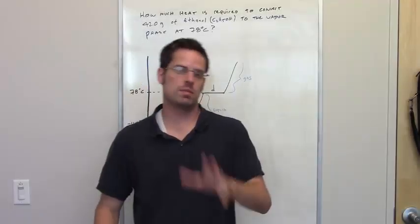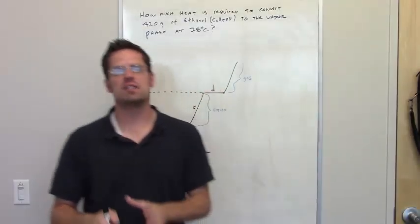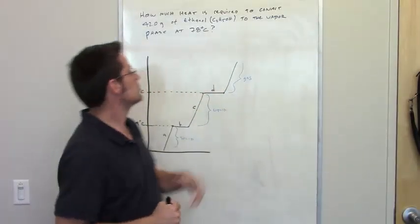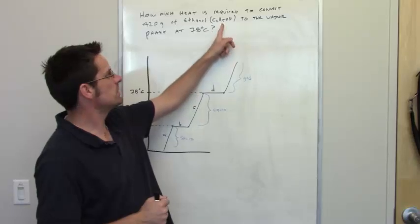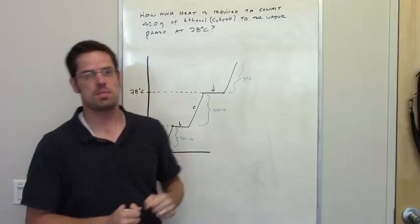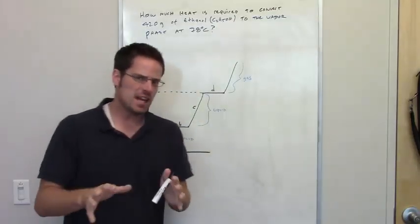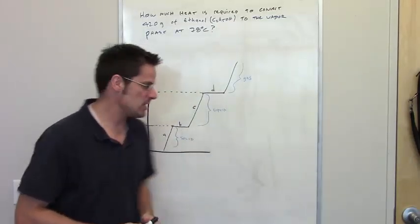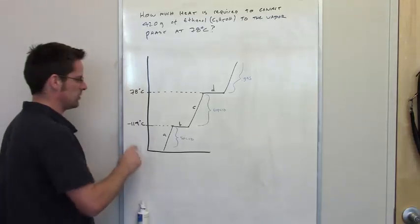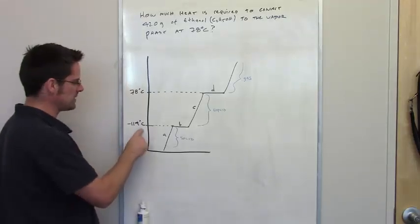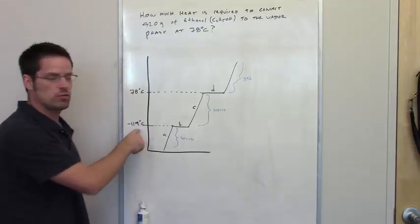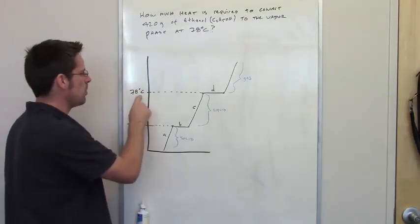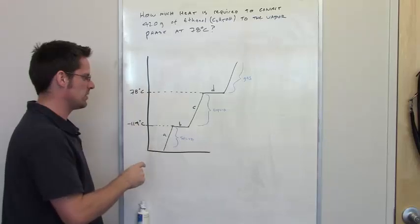This multi-part question begins by giving us information about ethanol, whose formula is given right there. I've taken that information and used it to construct a heat curve. Ethanol freezes at negative 114 degrees Celsius and boils at 78 degrees Celsius.